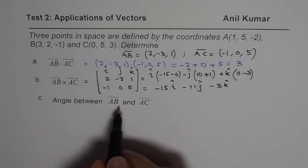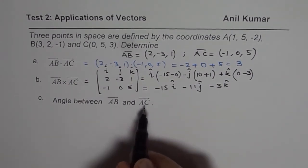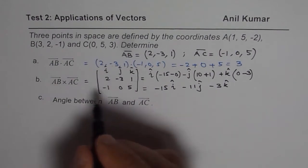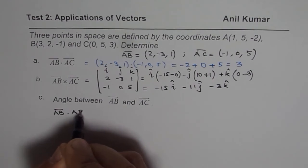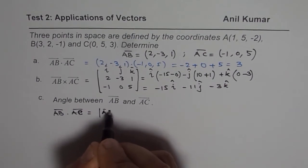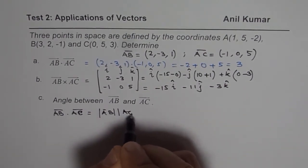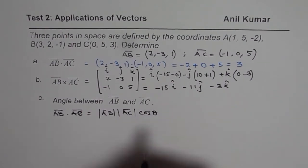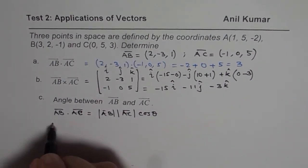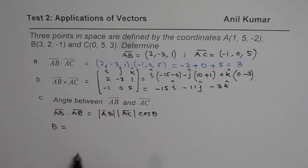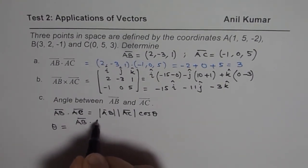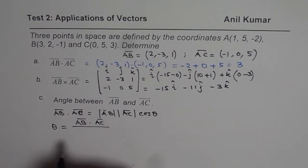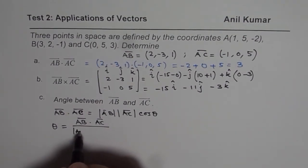Now, you need to find angle between AB and AC, which you can find using the dot product formula. You know, AB dot AC could be written as magnitude of AB times magnitude of AC times cosine of theta. So from here, you can find what theta is. So theta is the angle between these two. So dot product of these two, that is AB dot AC, divided by the product of magnitudes.